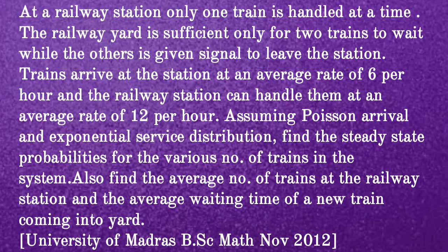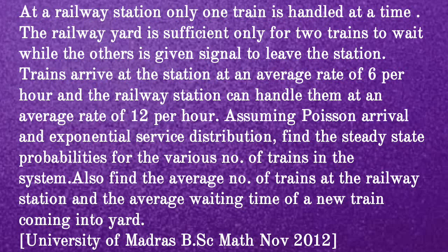Second problem: At a railway station, only one train is handled at a time. The railway yard can hold two trains waiting while another is given signal to leave. Trains arrive at an average rate of 6 per hour and the station handles them at 12 per hour. Assuming Poisson arrivals and exponential service, find the steady-state probabilities, the average number of trains at the station, and the average waiting time of a new train. This was asked in University of Madras B.Sc. Math November 2012.